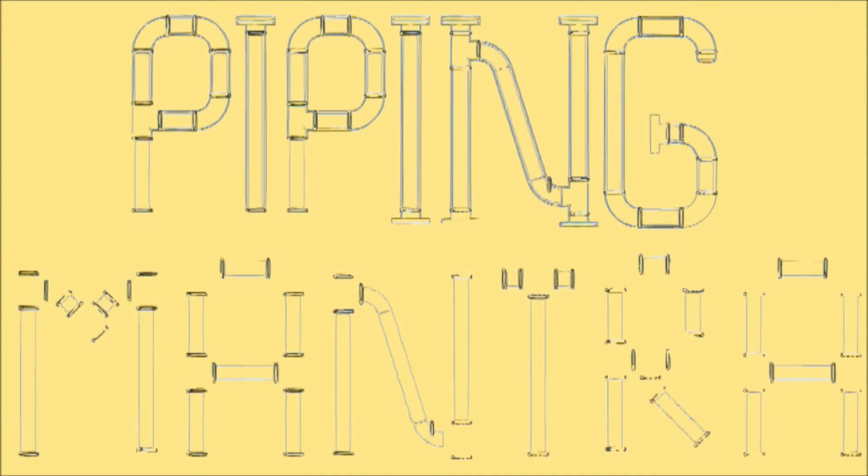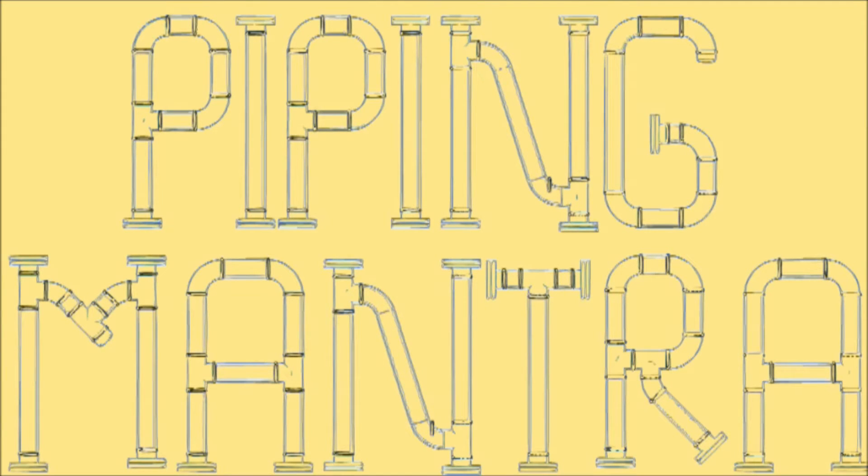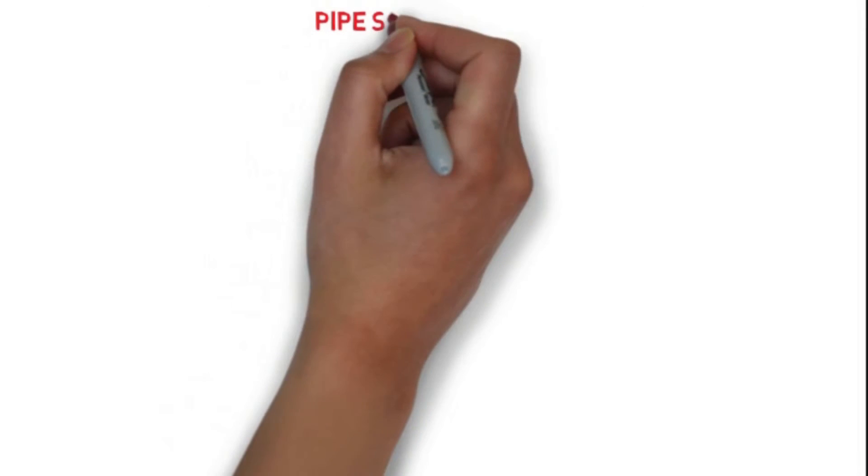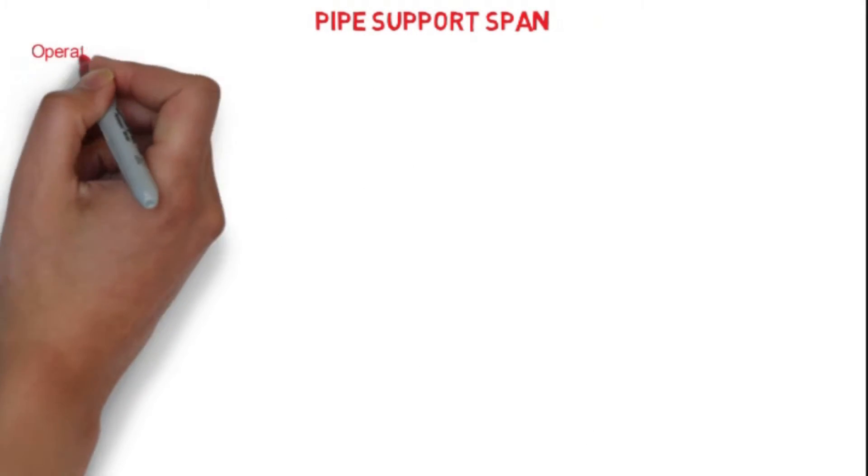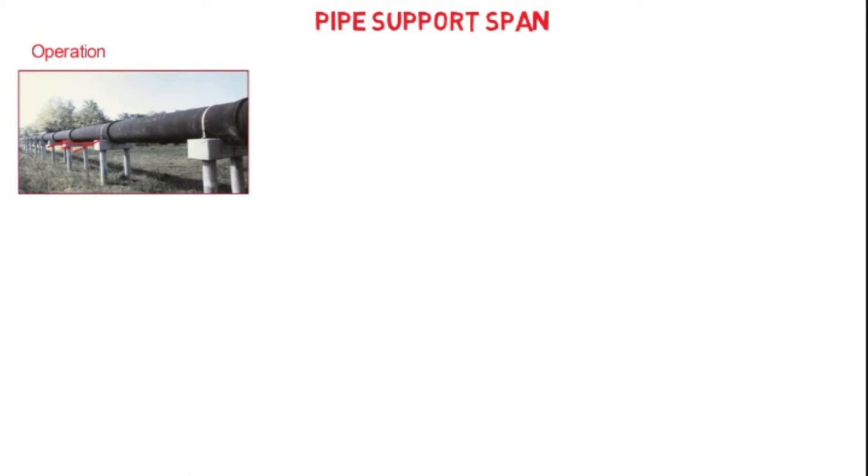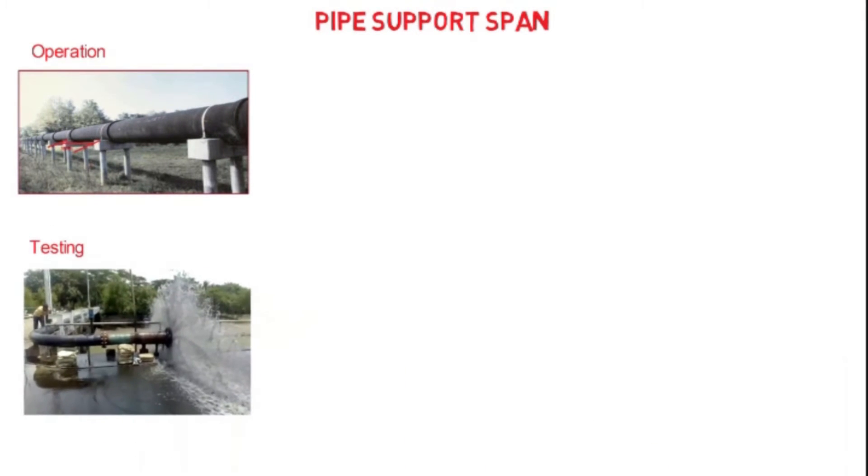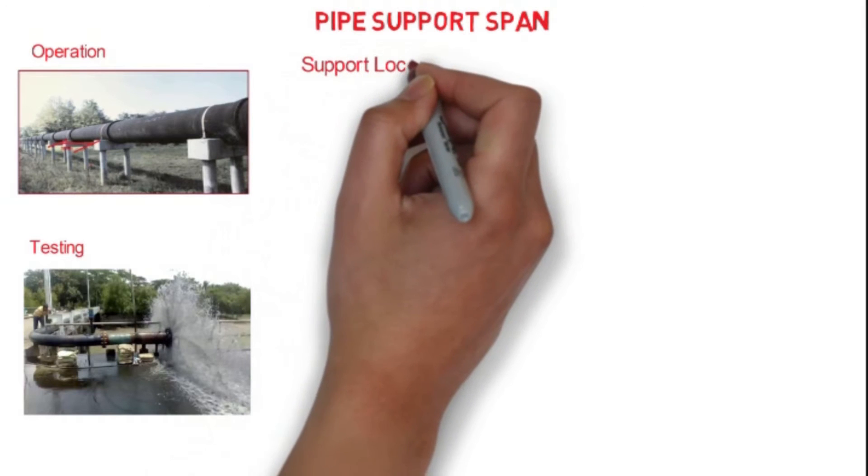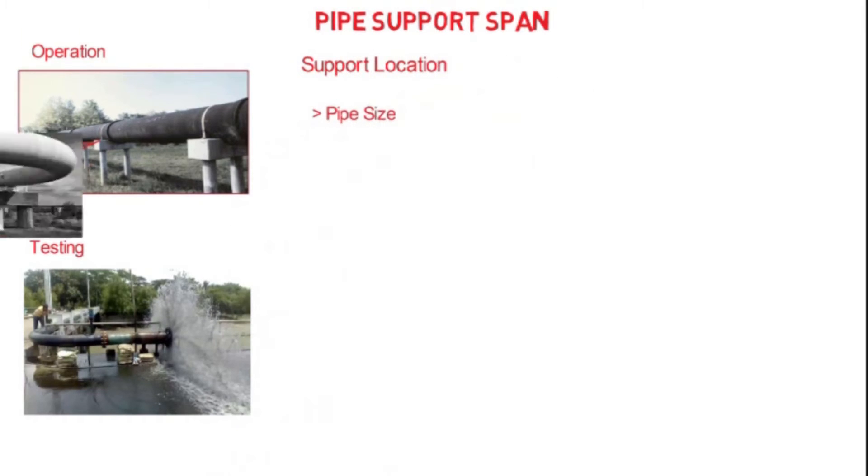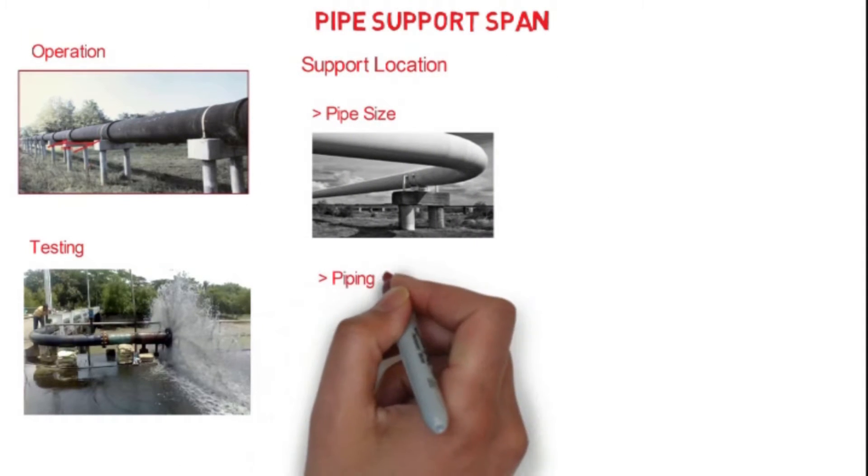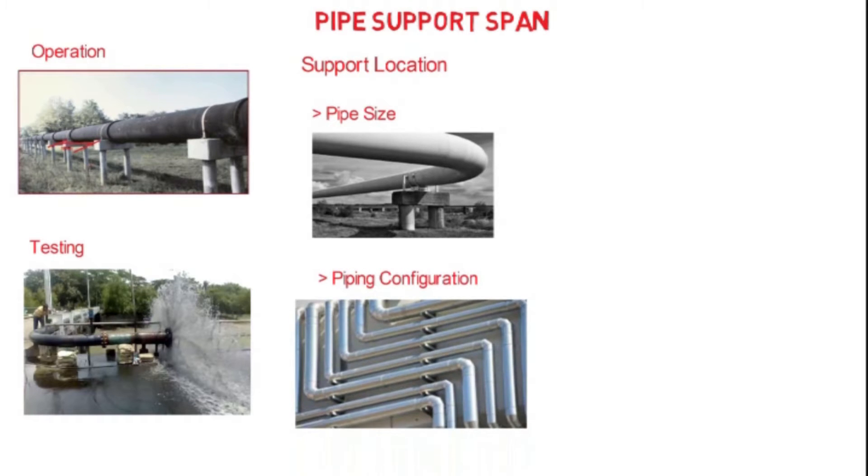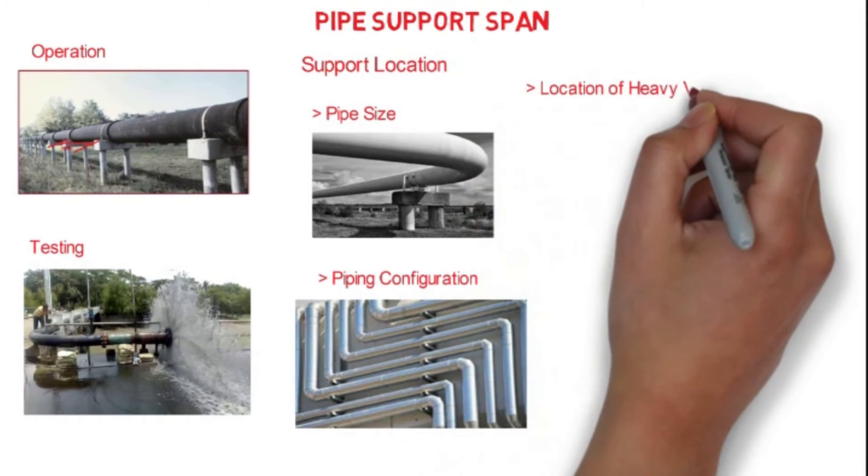Hello friends, welcome to our channel Piping Mantra. Today we are going to talk about piping support span. As we all know, pipe supports are required to support the line during all conditions, whether it is operation condition or testing condition. Support location depends upon many criteria like pipe size, piping configuration, the location of heavy valves and special items, and the availability of the structure for the support.